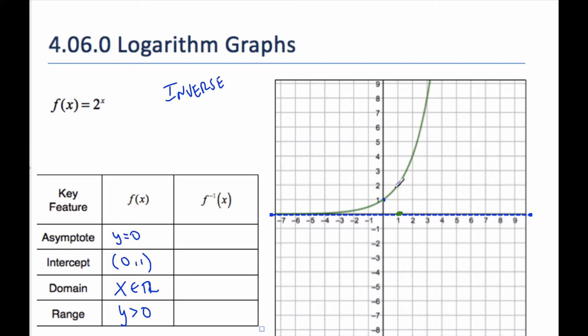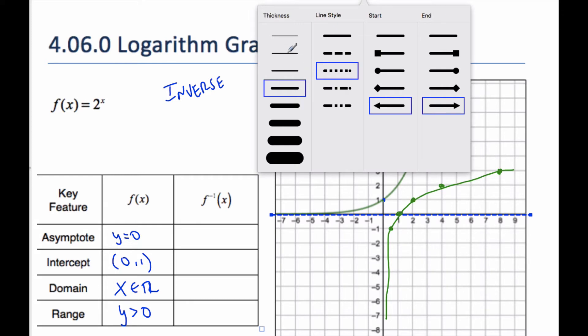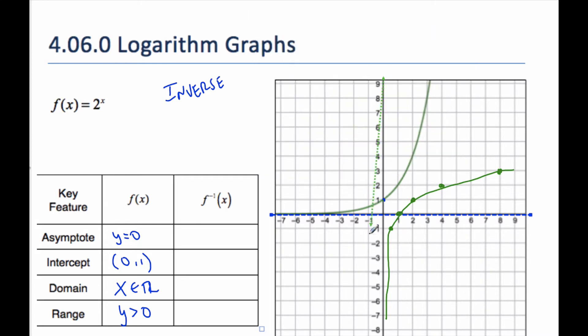This point (1,2) will become (2,1). And (2,4) will become (4,2). (3,8) will become (8,3). On this side, this is (-1, 1/2), so (1/2, -1). And my graph will be something like this. And my asymptote will also be taken care of, and it's going to go down this way now.